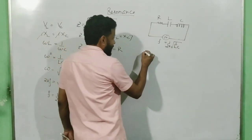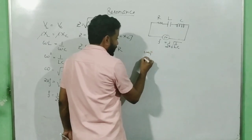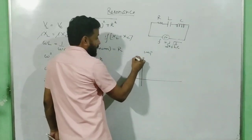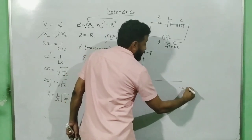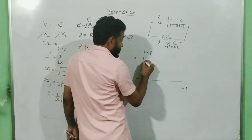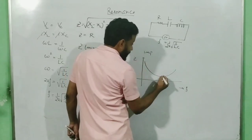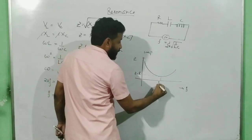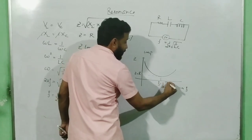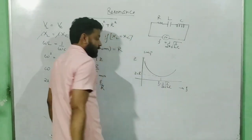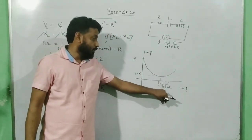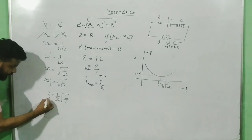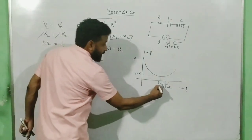If we plot impedance versus frequency, the graph attains a minimum value equal to R when the frequency equals 1 by 2π root over of 1 by LC. This resonance frequency is denoted as F naught, so F naught equals 1 by 2π root over of 1 by LC.